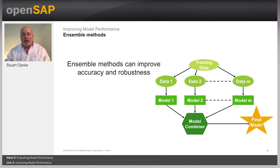Bootstrap aggregating, often abbreviated as bagging, involves having each model in the ensemble vote with equal weight in order to promote model variance. Bagging trains each model in the ensemble using a randomly drawn subset of the training set. As an example, the random forest algorithm combines random decision trees with bagging to achieve very high classification accuracy.